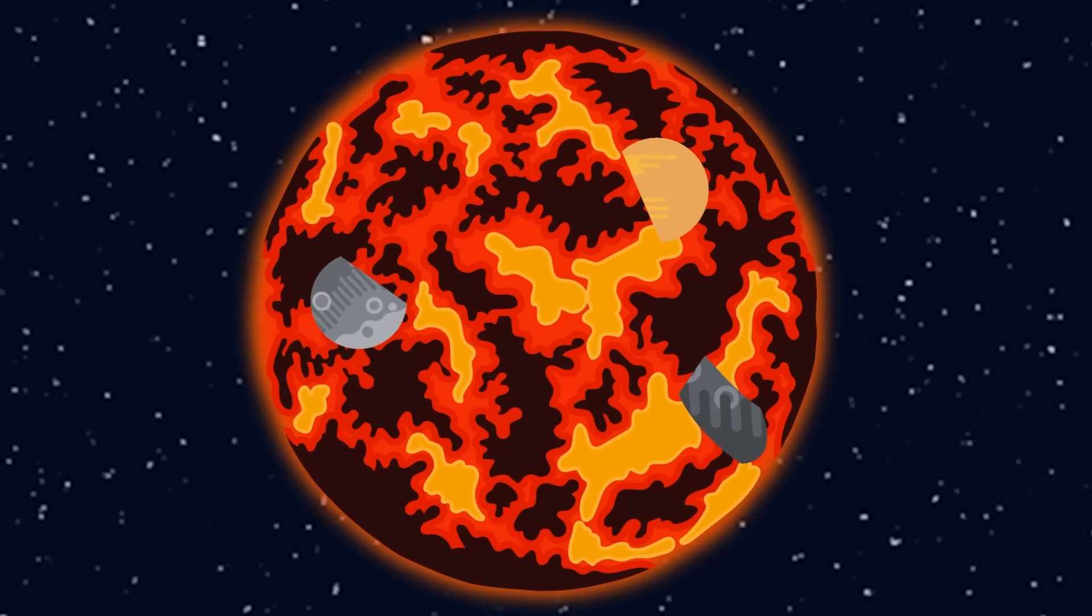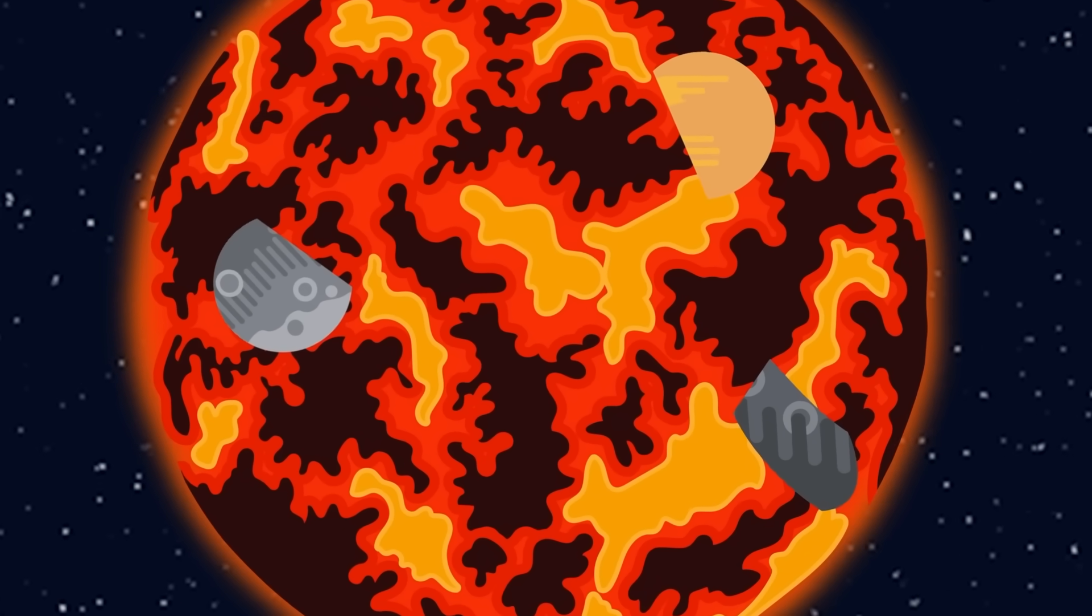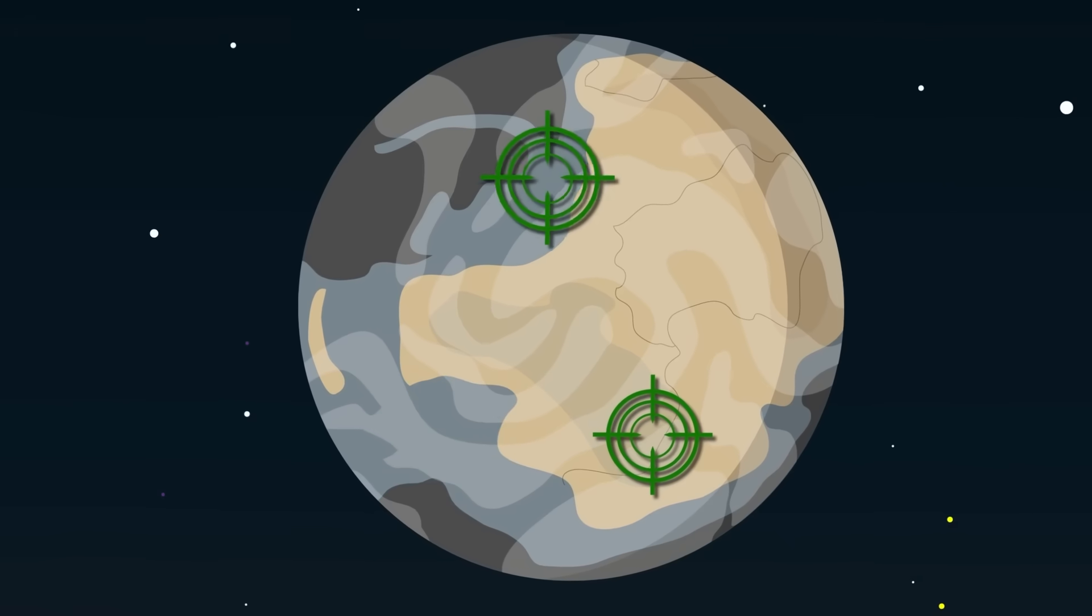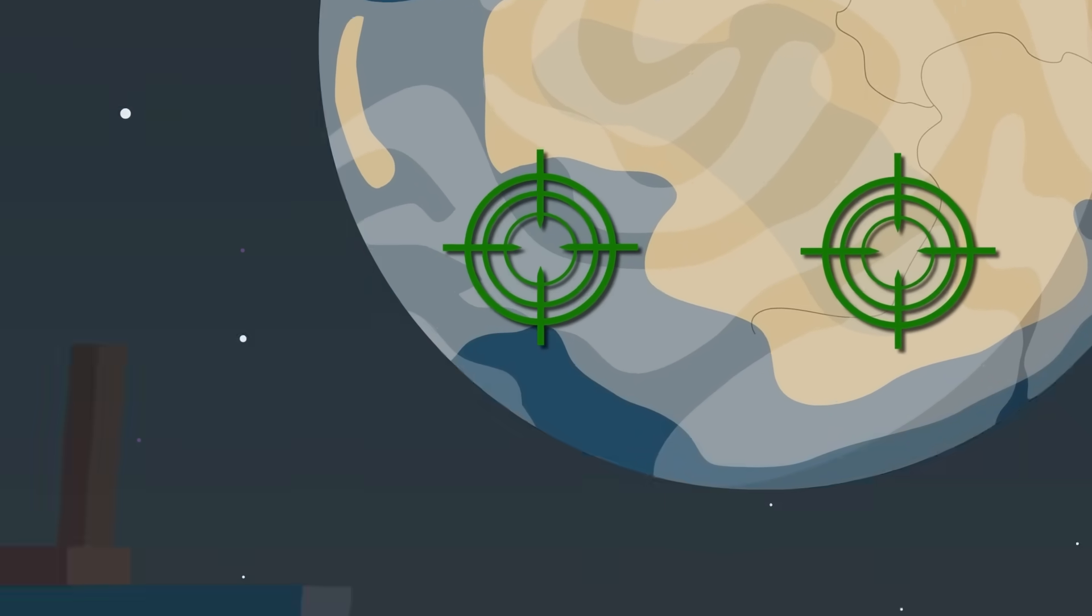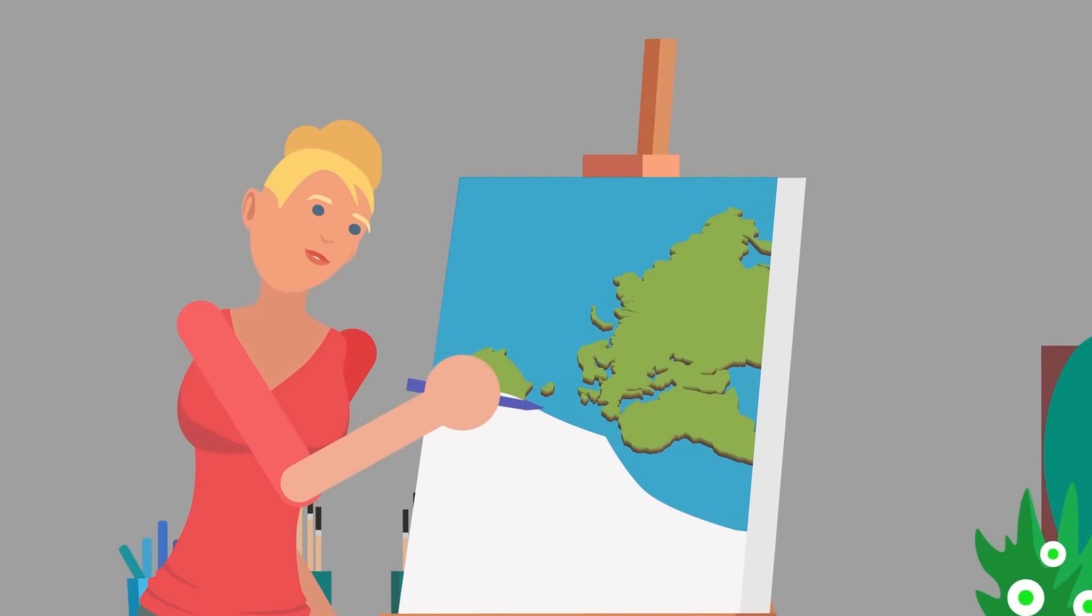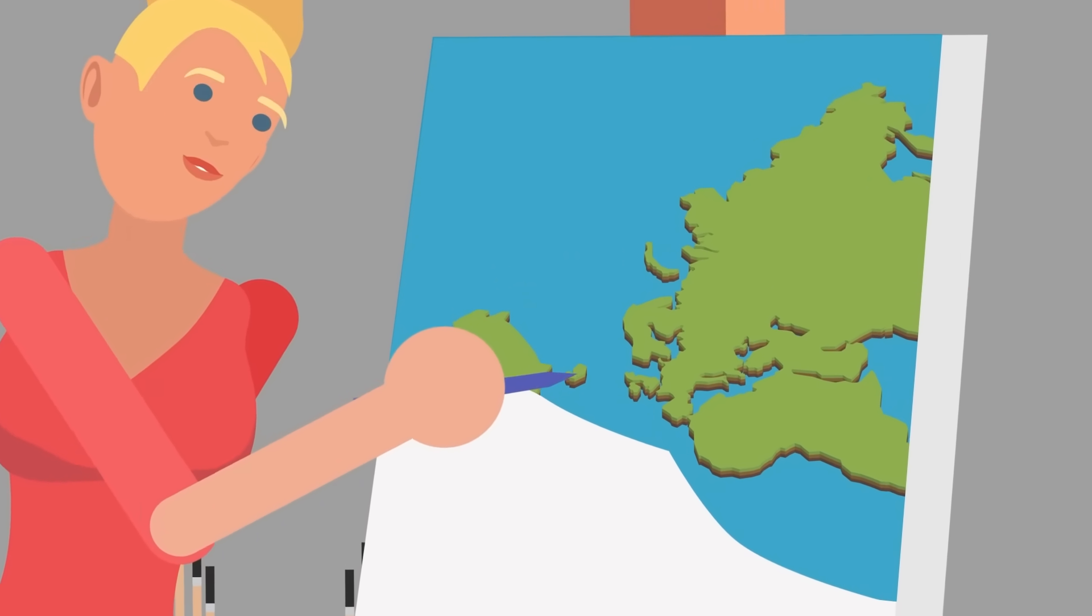With each strike, the Earth was hit with a little more water, which seeped into the still porous surface. As the planet hardened, the frequent strikes would add more water to the surface, shaping its current form, and eventually creating the map of the world we know today.